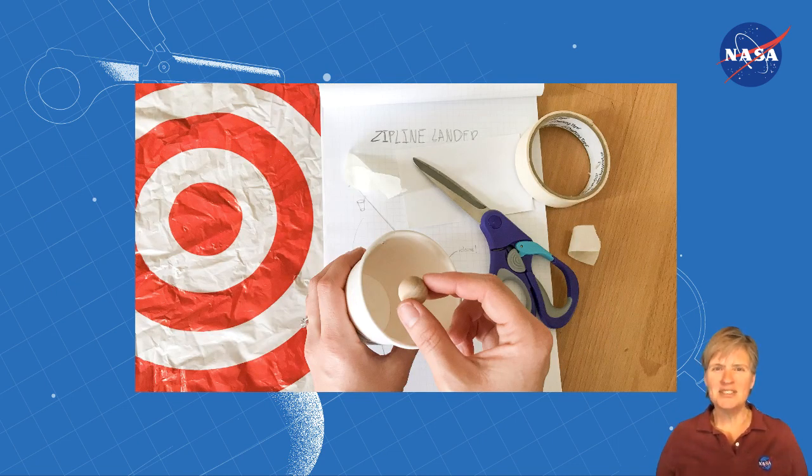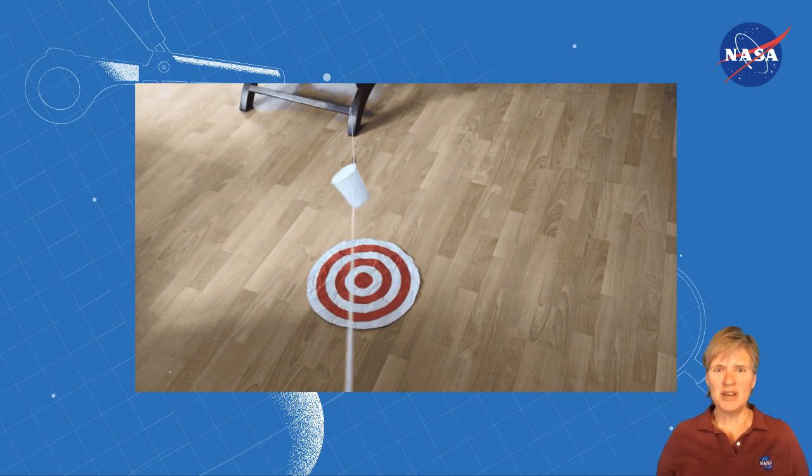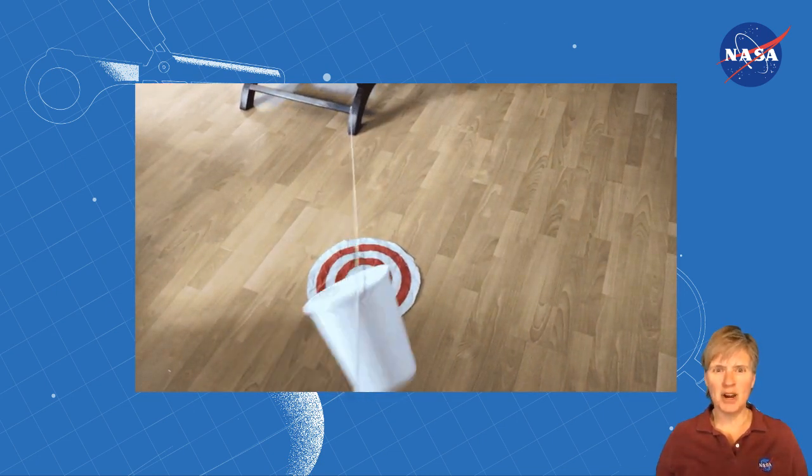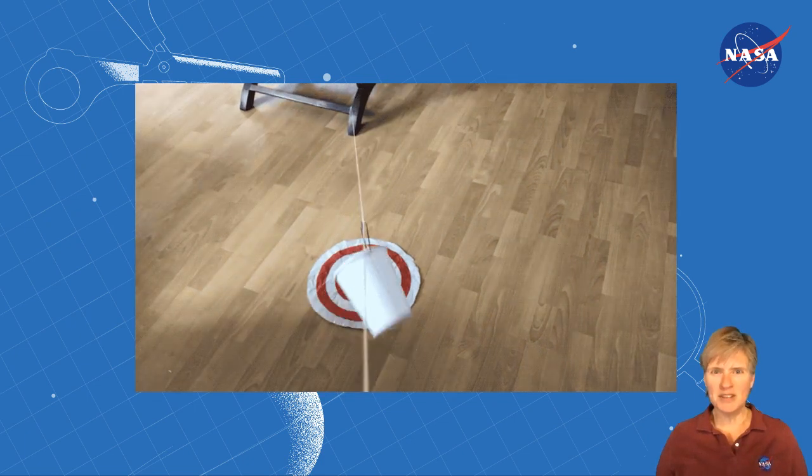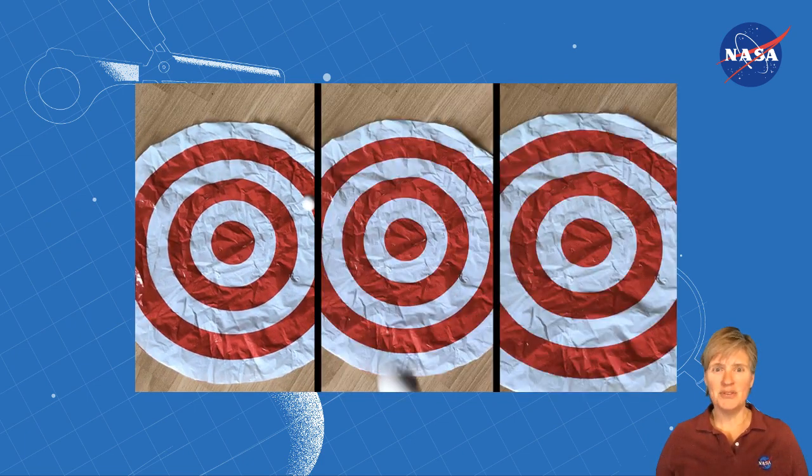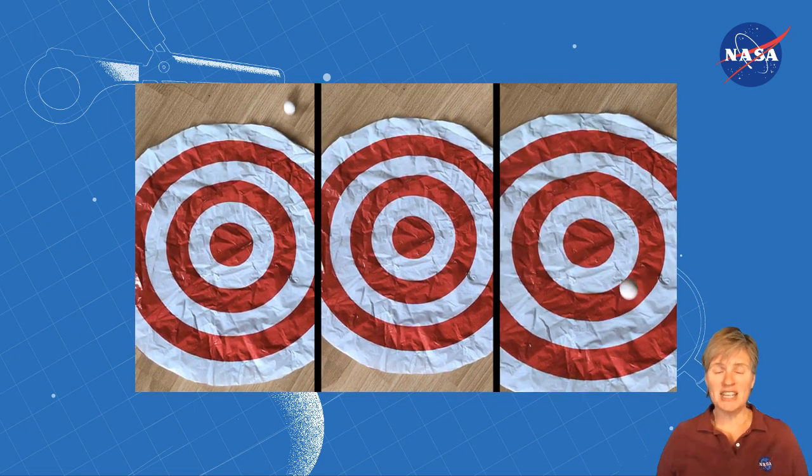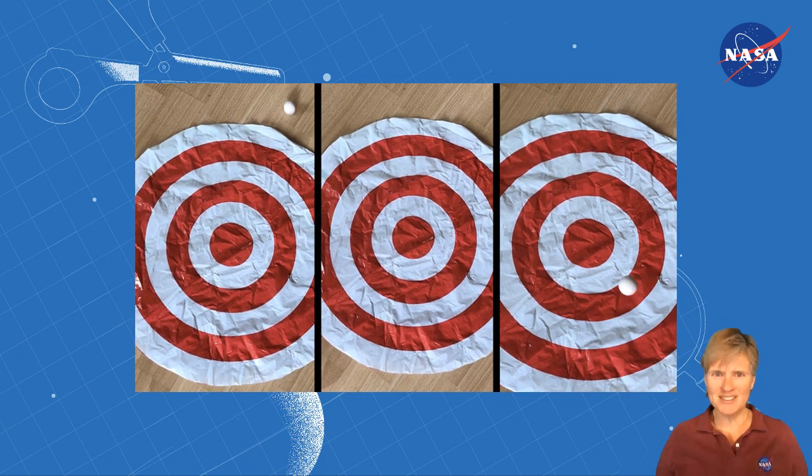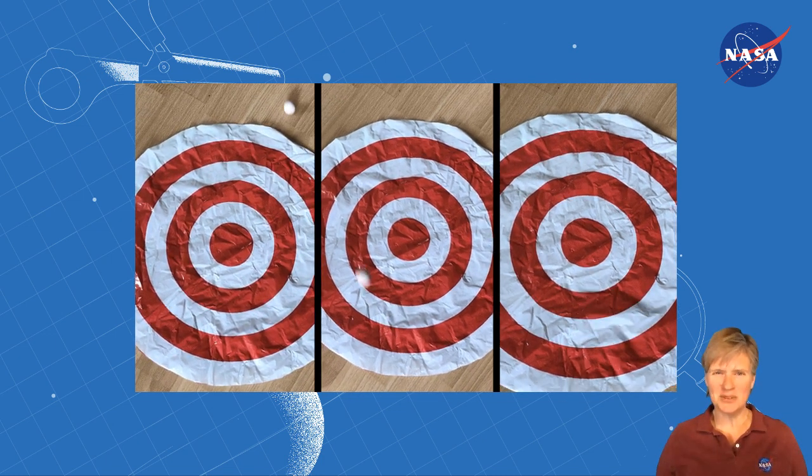Now test your design. Release your cup at the top of the zip line and try to land your marble on the target while your spacecraft is moving. Use the numbered rings on your target to keep track of your accuracy. Repeat your runs several times to get consistent results.